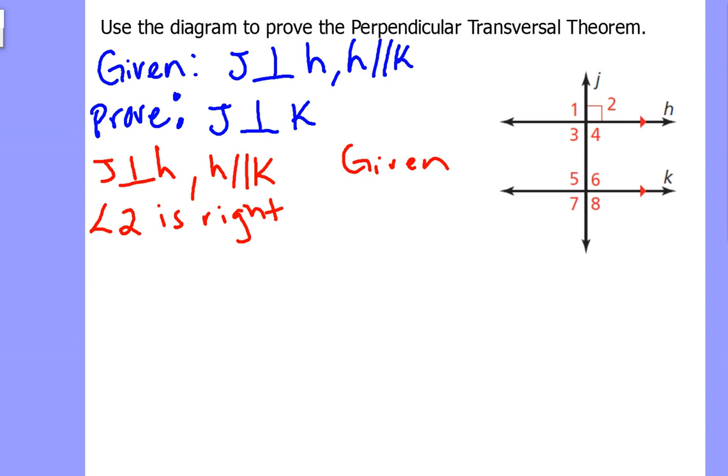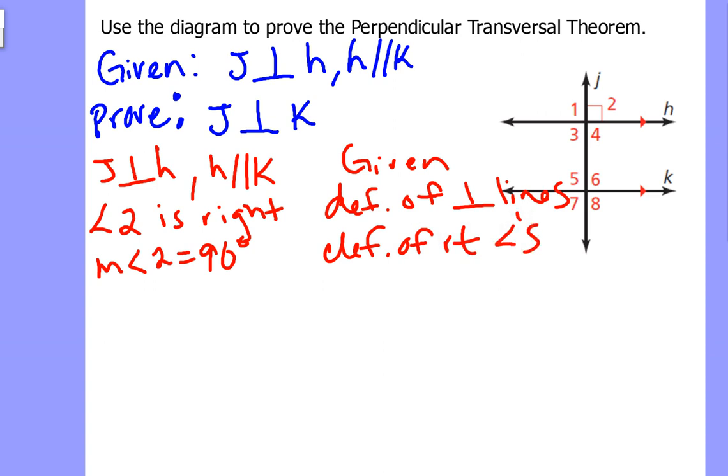Again, what told me that? The definition of perpendicular lines is what filled me in. What does it mean to be a right angle? Well, it means that the measure of angle 2 equals 90 degrees. Again, this is what our definition of right angles tells me. So why do I take it to this step?